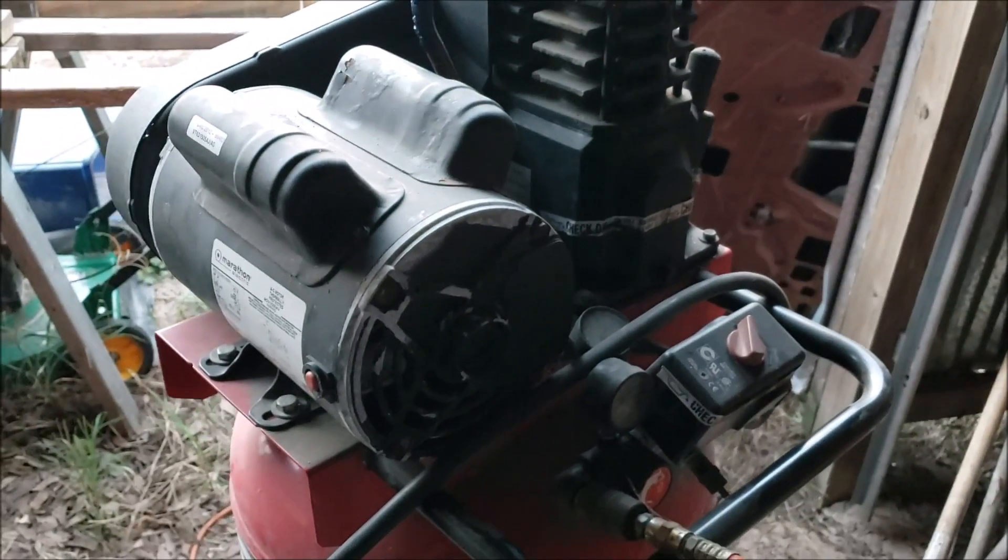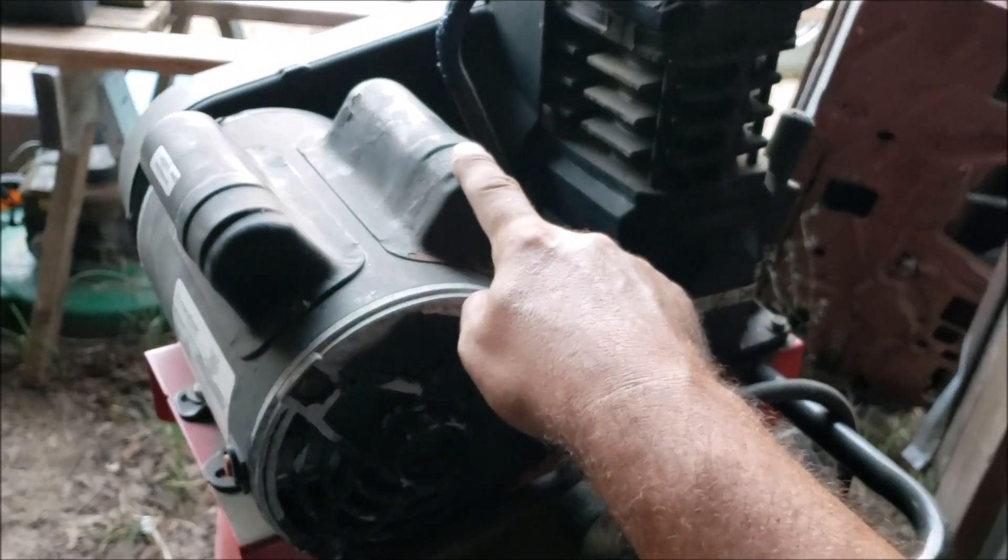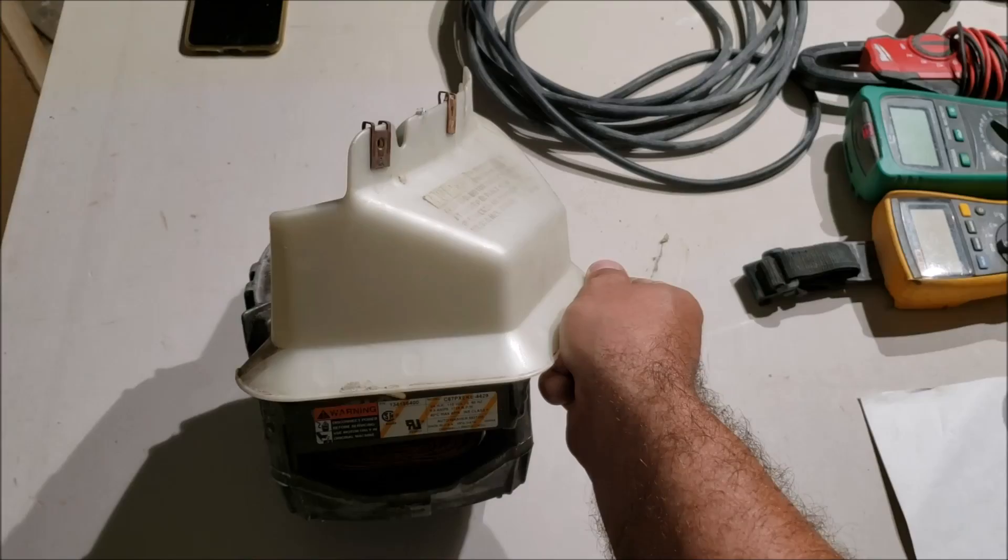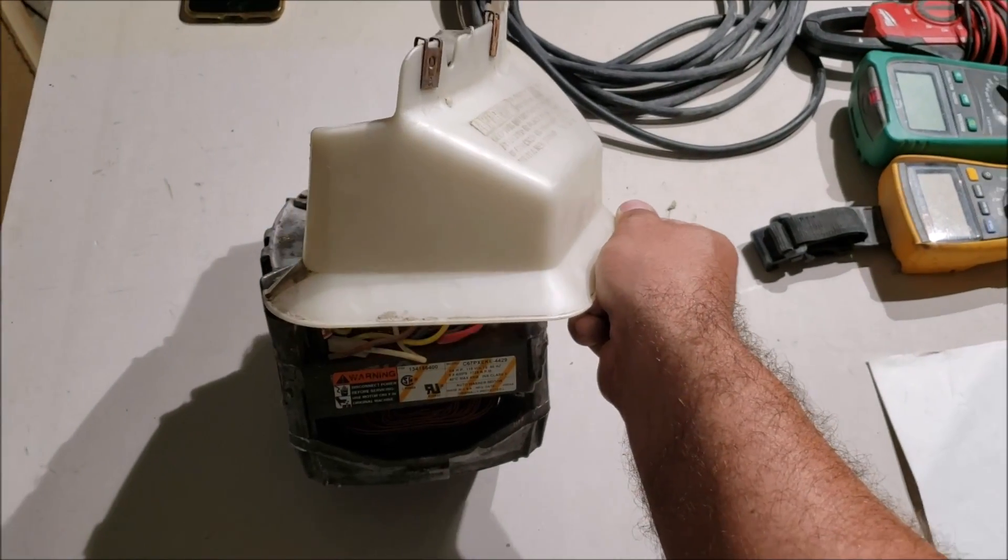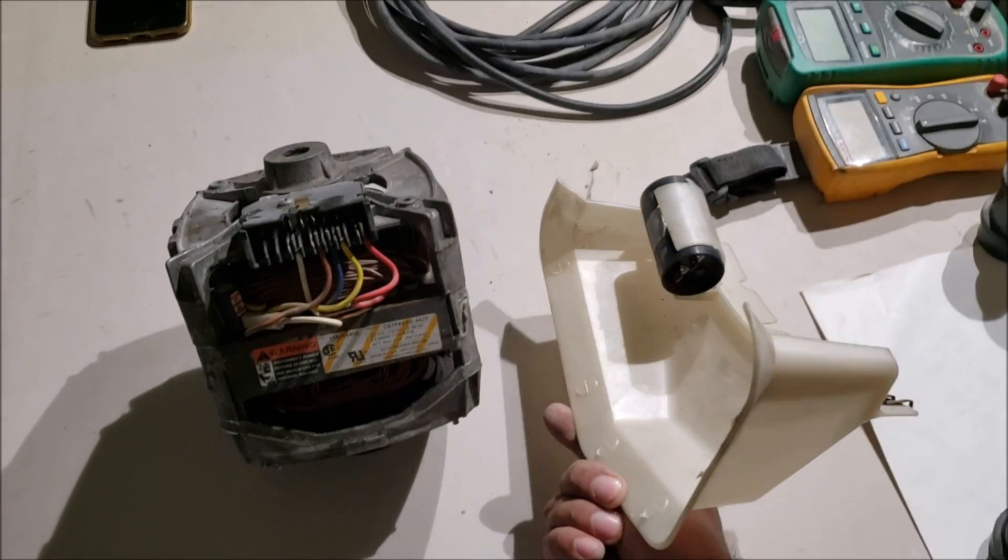This is a 110 volt air compressor with two capacitors, one start and one run. The washing machine motor has a cover, and when you take it off, the capacitor is hiding out back there. The point is to locate your capacitor.